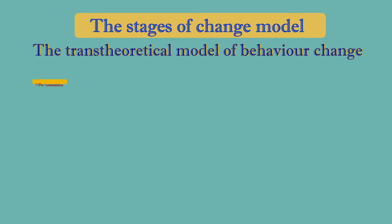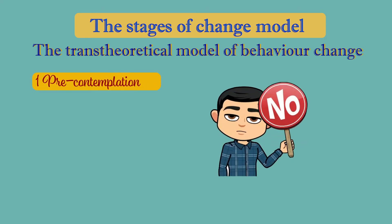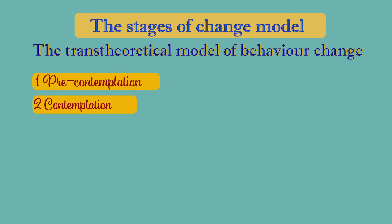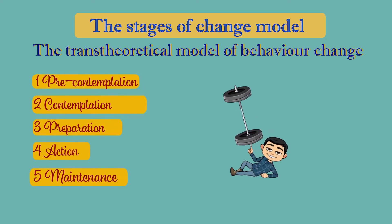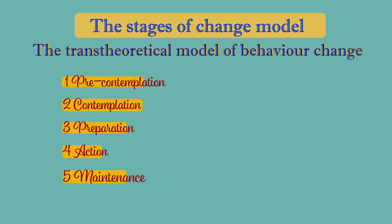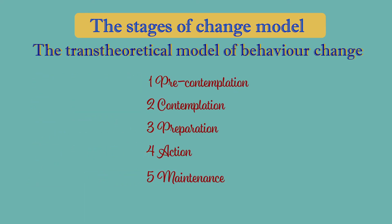Components of the stages of change model: pre-contemplation — not intending to make any changes; contemplation — considering a change; preparation — making small changes; action — actively engaging in a new behavior; maintenance — sustaining the change over time. These stages do not always occur in a linear fashion, simply moving from one to five. This theory describes behavior change as dynamic and not all-or-nothing. For example, an individual may move to the preparation stage and then back to the contemplation stage several times before progressing to the action stage.